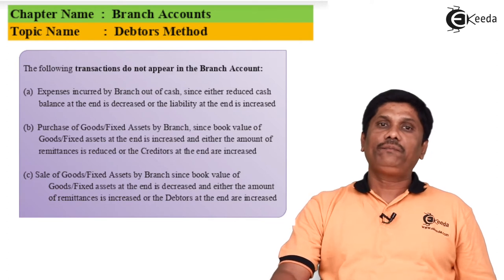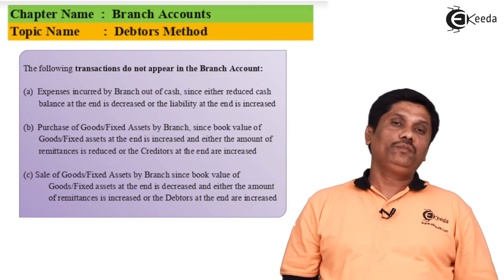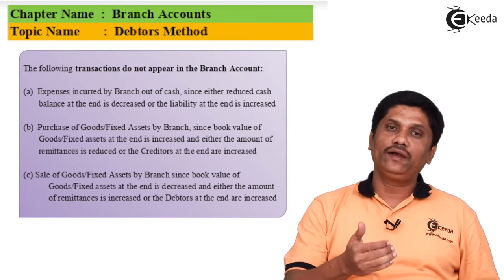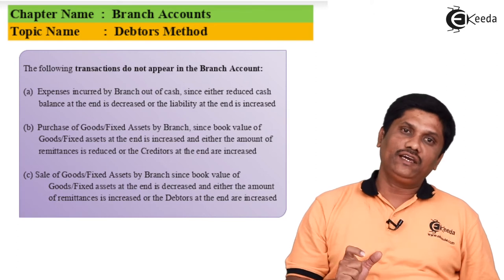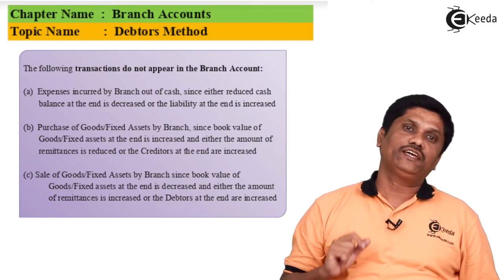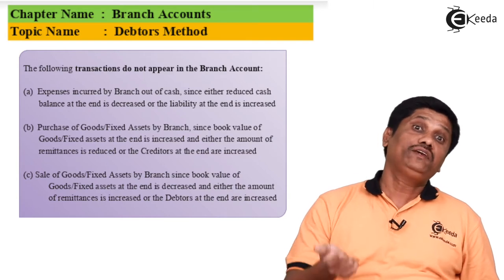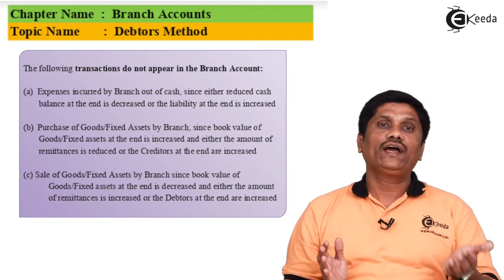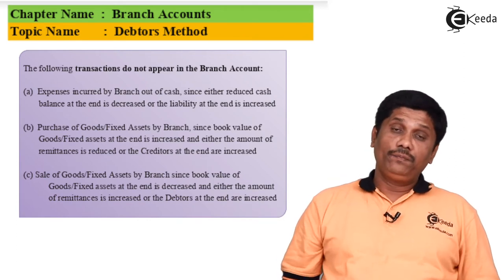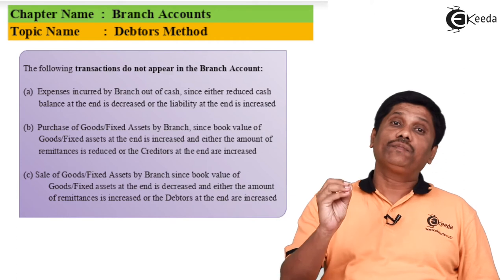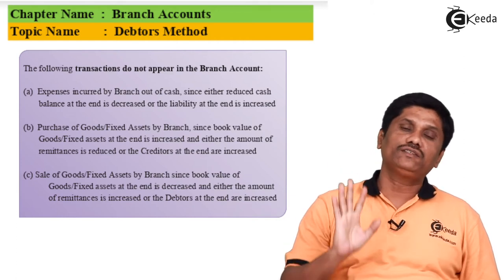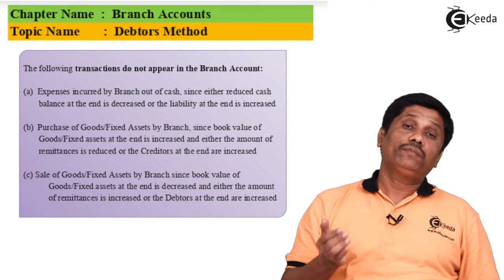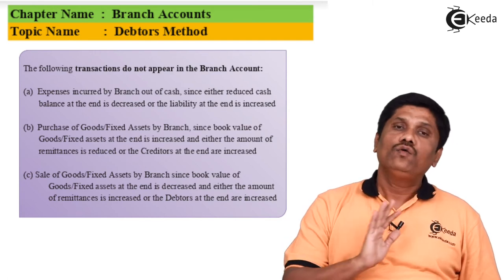Now, let's look at transactions that will NOT appear in the branch account. First: expenses paid by the branch out of cash supplied by the head office will not be recorded separately — they are indirectly recorded via the cash account. Second: purchase of a fixed asset by the branch out of money supplied by the head office is also not recorded directly, because the cash balance will automatically adjust. Branch internal transactions where the head office has no direct involvement are not recorded.